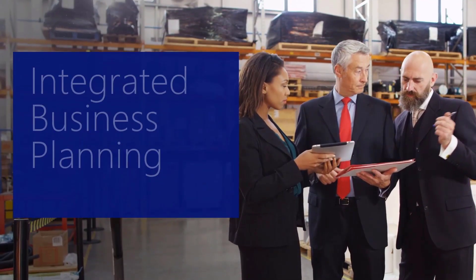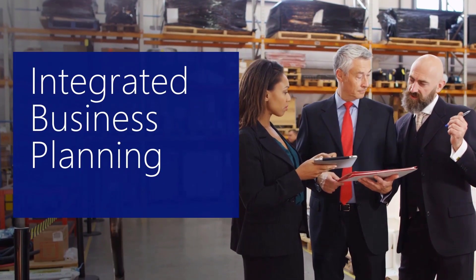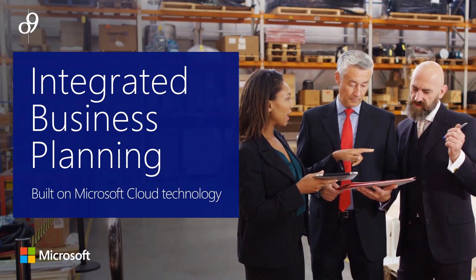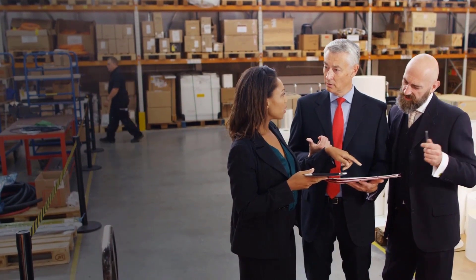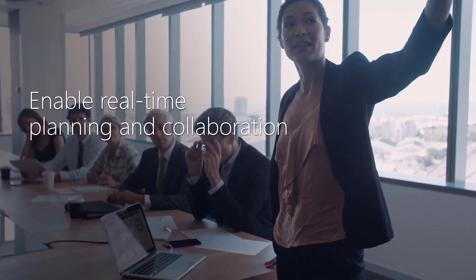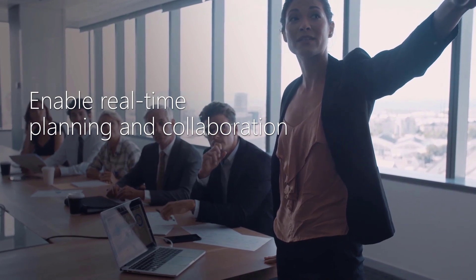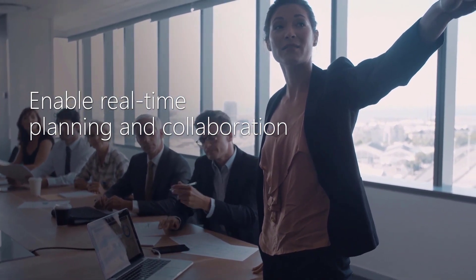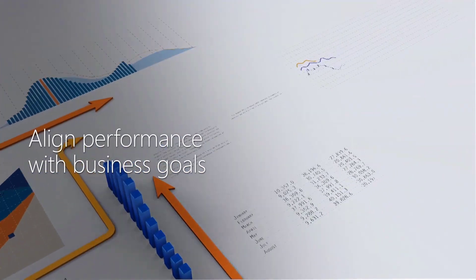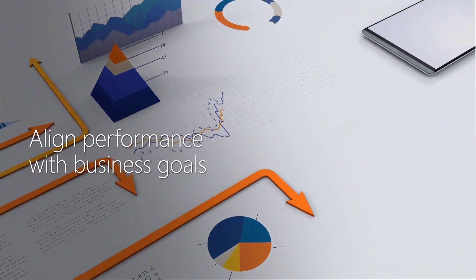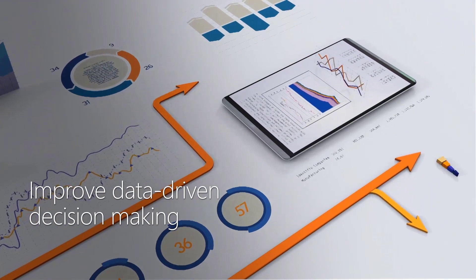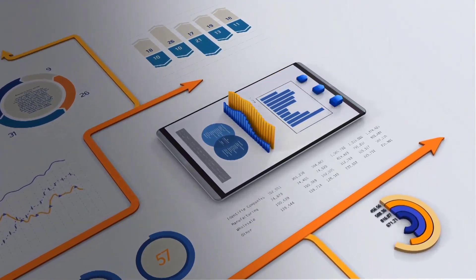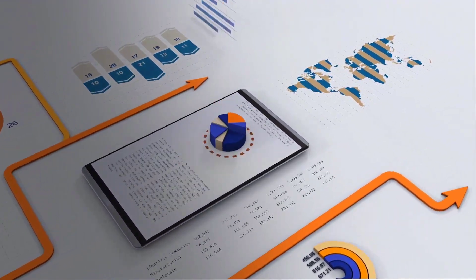Welcome to this demonstration of the O9 Integrated Business Planning Solution, built on Microsoft Cloud Technology. The O9 Integrated Business Planning Solution helps manufacturing organizations enable real-time planning and cross-functional collaboration on an AI-powered digital platform, continuously align performance with business goals via weekly S&OP processes, and improve data-driven decision-making by providing executives and planners access to advanced analytics and insights.